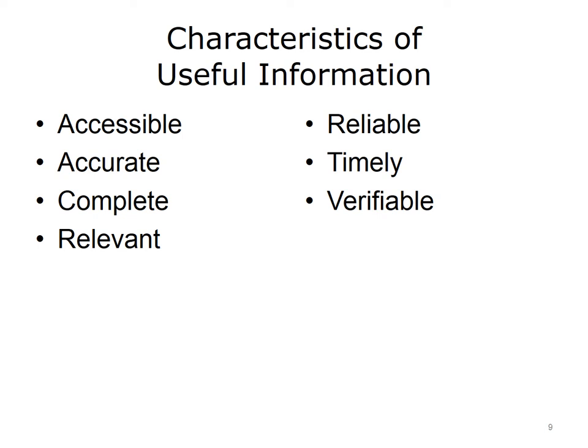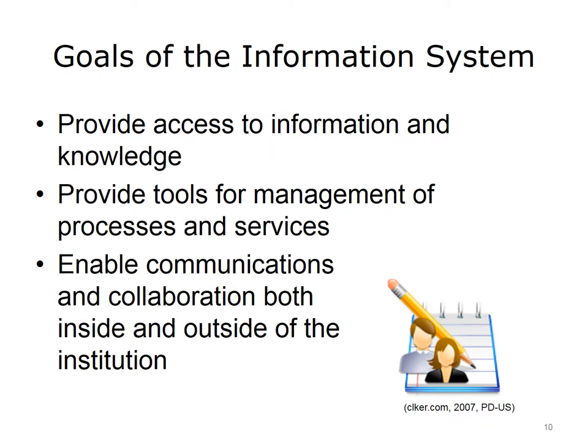The information must be relevant to the task at hand. A clinician probably does not need reports about billing information while treating a patient, but might need information about medication dosing. Useful information must be reliable — reliability depends on data accuracy and on the methods used to discover relationships between data components. Information must be timely, with the capacity to be generated when it is needed. And finally, information must be verifiable. Information systems provide access to information and knowledge, which allows for planning and decision-making. From a small business to a large institution, information is key for successful operations.